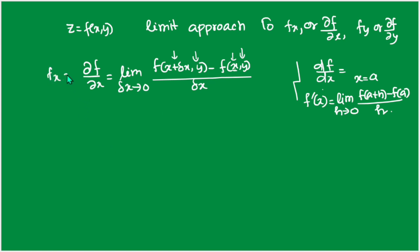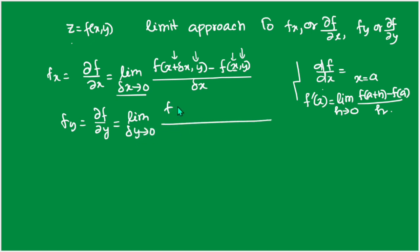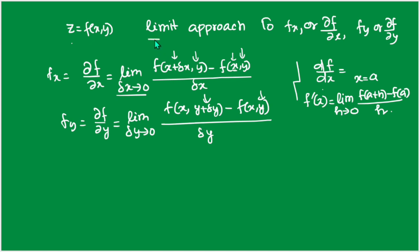Similarly, the partial derivative with respect to y is: ∂f/∂y = limit as Δy→0 of [f(x, y + Δy) − f(x, y)] / Δy. Here, y changes from its initial value y to y + Δy, while x is fixed. This is the definition of the partial derivative of the function with respect to both x and y using the limit approach.